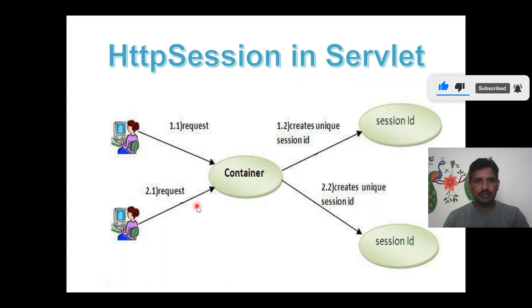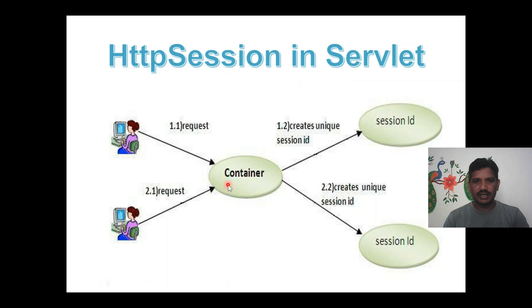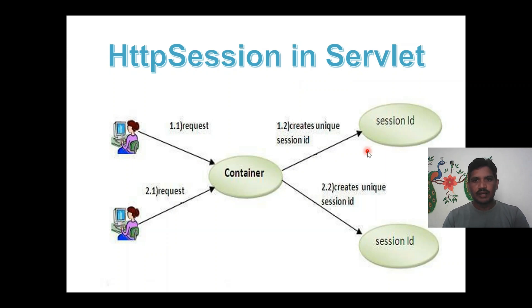See this diagram. There are two users sending requests to the server. At that time, the server creates a session ID for each and every user. The session IDs are unique. By seeing the session ID, the server can easily recognize whether that user is a new user or an old user.